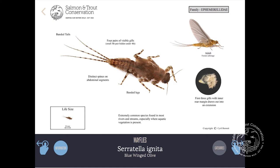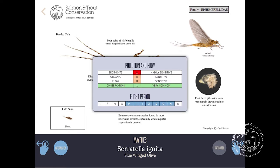Tap the information icon, positioned bottom left of the screen, and a box appears which indicates the species tolerance to stress factors. This is important, as impacts can vary between individual species and consequently can provide invaluable information as to the health of a river.